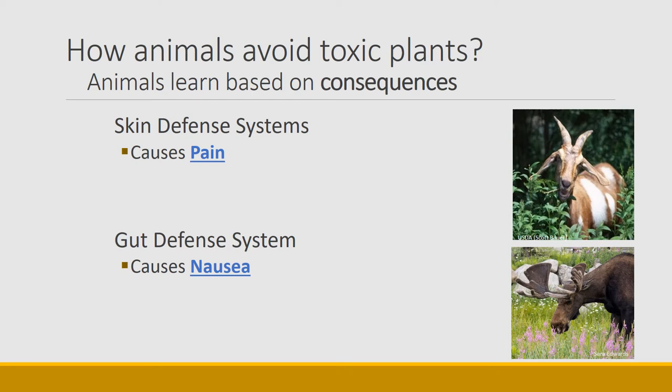How do animals avoid toxic plants? They obviously have some mechanisms of avoiding toxic plants, otherwise they die. Animals have ways to determine and avoid toxic plants, and the key is that animals learn based on consequences — they learn to avoid toxic plants.